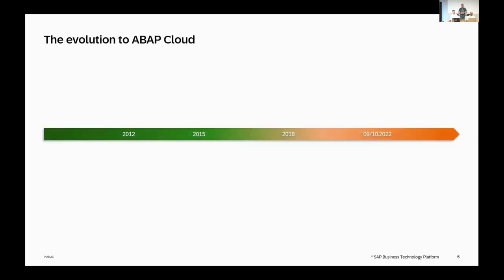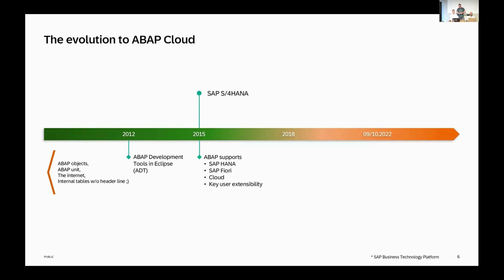But is ABAP Cloud completely new? Of course not. It contains all the innovations of the last decade — ADT, the ABAP development tools in Eclipse, ABAP object orientation, ABAP unit, and similar things. With SAP S4HANA we also support HANA as a database and Fiori as the UI technology on top. We support cloud development including key user extensibility. With Steampunk we introduced further innovations — a cloud-ready extension model, and of course RAP, the ABAP RESTful Application Programming model, which is a huge part of ABAP Cloud focusing on the transactional aspect of applications.